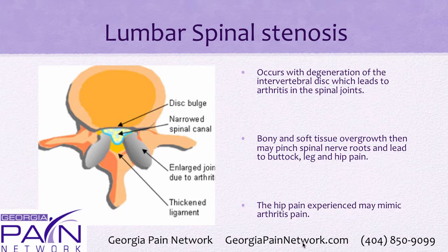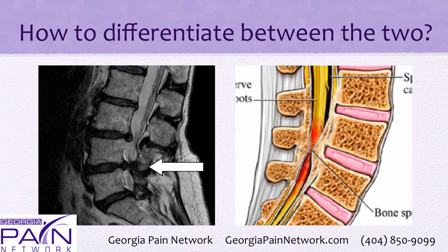This can pinch on nerve roots as they're trying to get out from the spine and cause significant pain in one's buttock area, hips, thighs, and down the leg. So there can be significant overlap between hip arthritis and lumbar spinal stenosis.